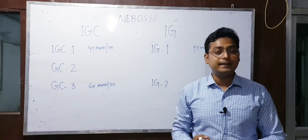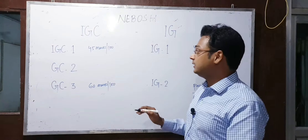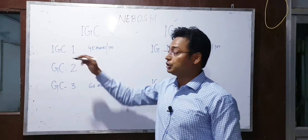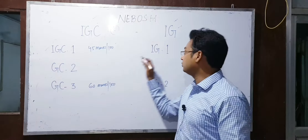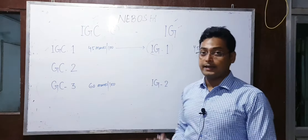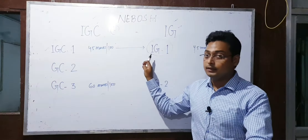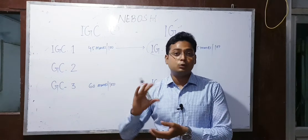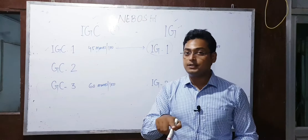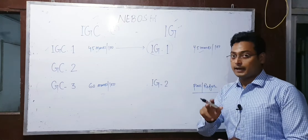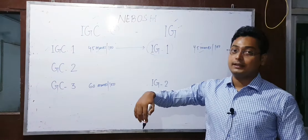Ab hum thoda detail mein baat karte hain ki kya differences hain. First of all, jab NEBOSH IGC hua karta tha 2019 se pehle, to teen paper hote the. Pehla paper tha NEBOSH IGC 1 — this paper was of management. NEBOSH IGC 1 ka paper jo tha woh abhi bhi hai; isko IG 1 kar diya gaya hai. Earlier the paper was of 100 marks; out of 100 you needed to bring 45 marks to pass. IG 1 mein abhi same hai — 100 marks ka paper hai, pass hone ke liye minimum 45 marks chahiye.